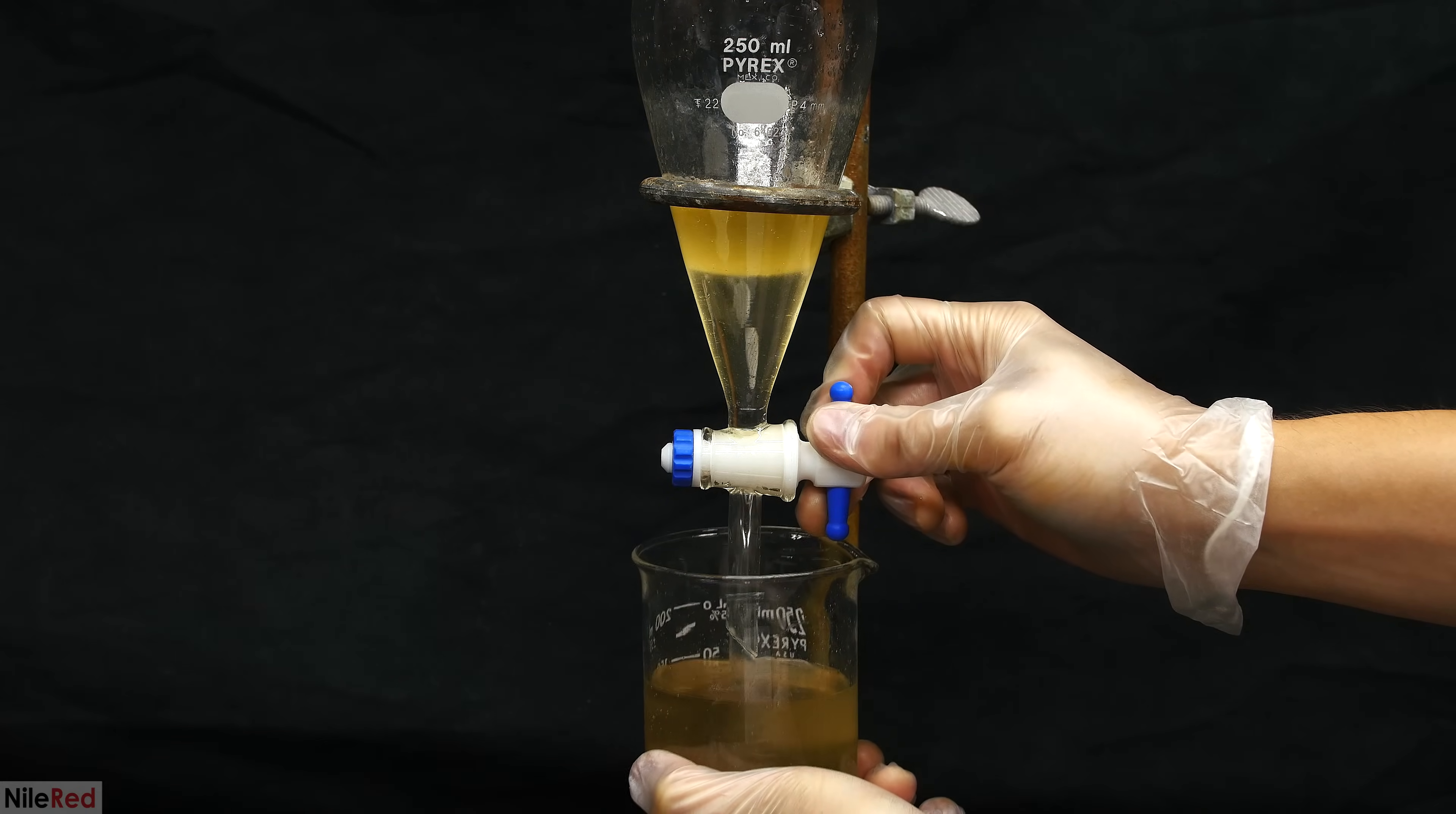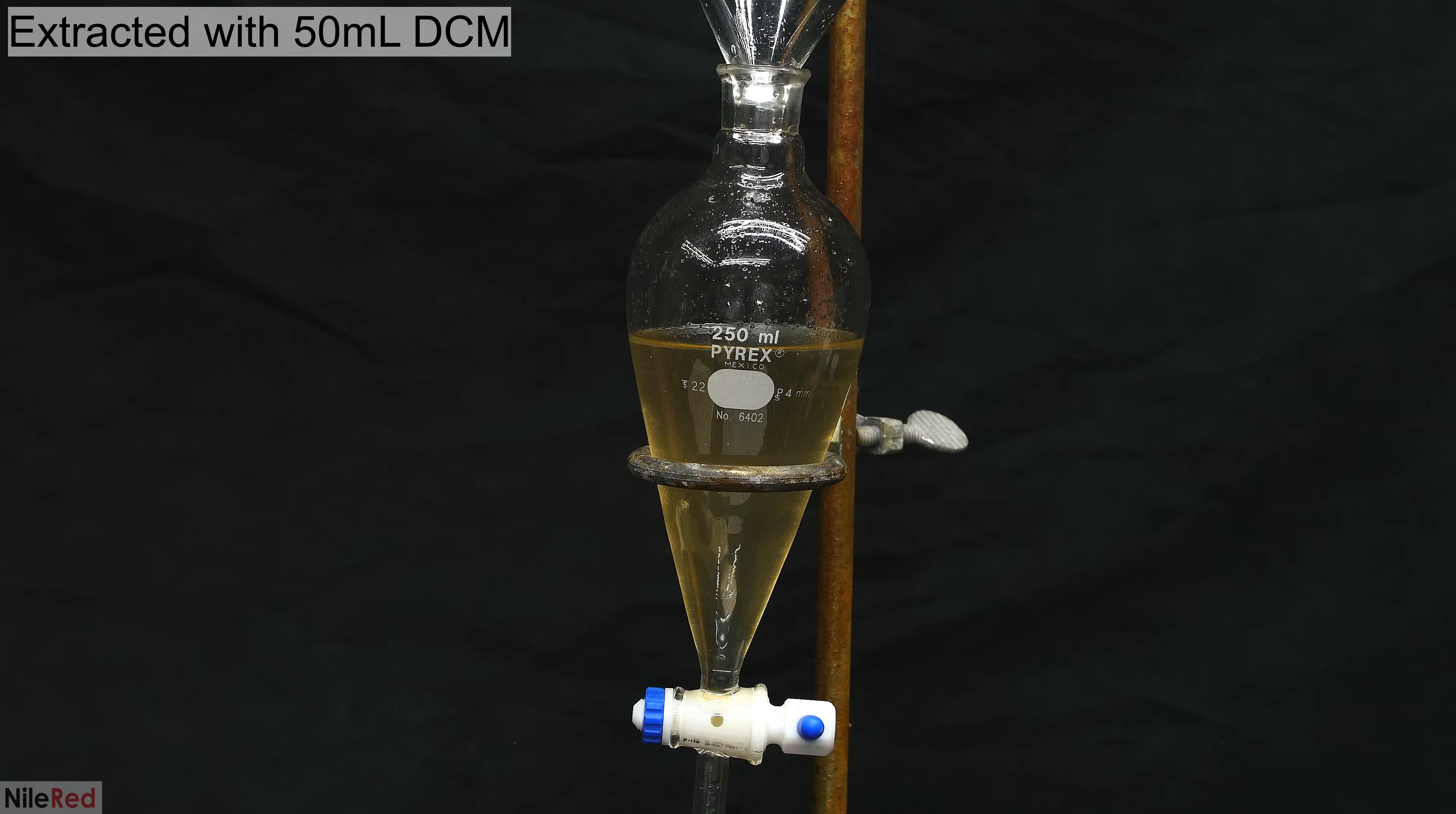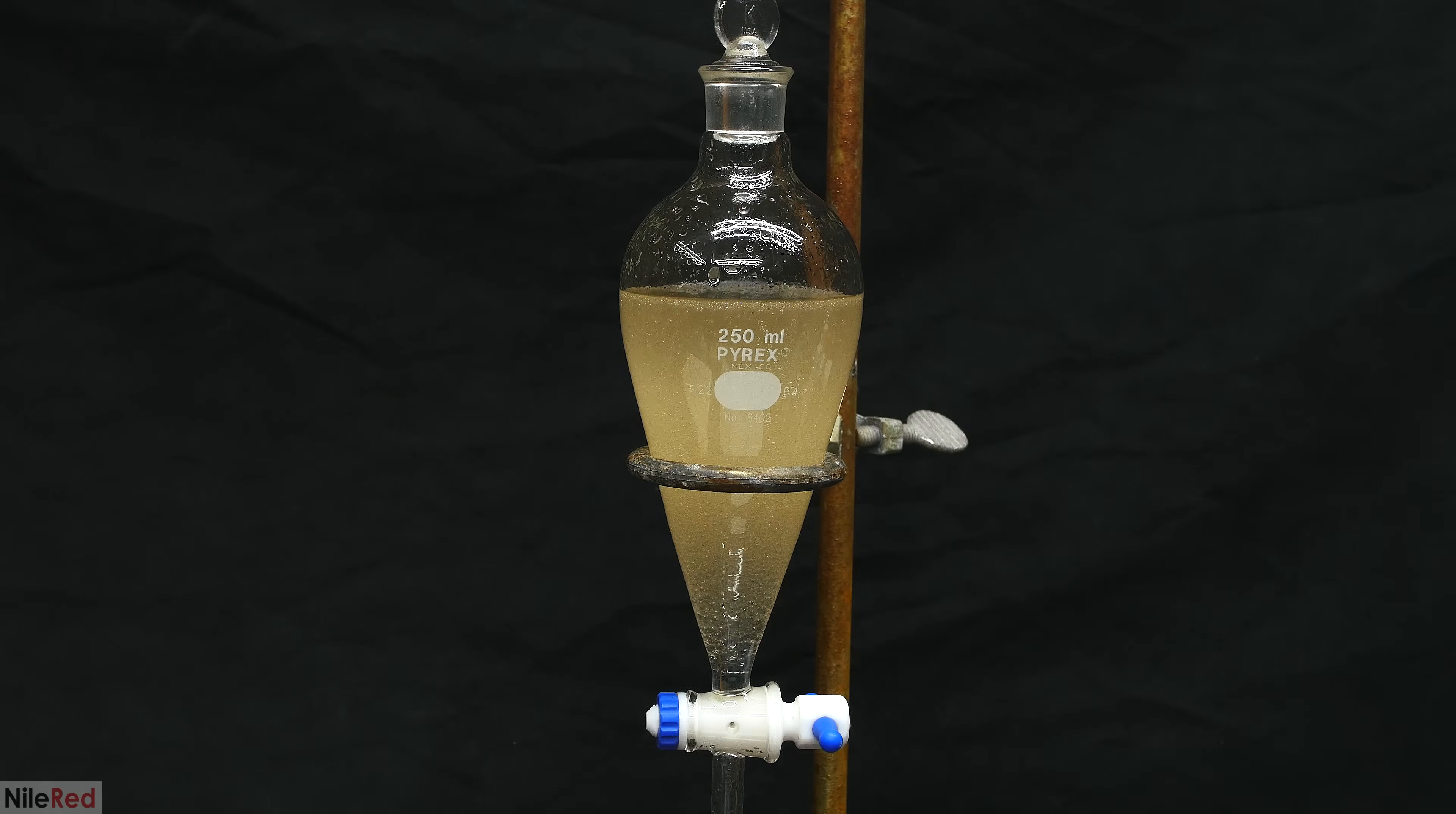The lower aqueous layer is drained into a beaker and it's momentarily placed on the side. The upper layer, which should be almost entirely anisole, is poured into another beaker. The separatory funnel is placed back on the stand, and I pour the aqueous layer back in. I then add 50 milliliters of dichloromethane. Anisole is practically insoluble in water, but some of it either still dissolves or just floats around in suspension. Anisole is soluble in DCM, so with this washing step, we're able to pull any anisole that might have been left behind.